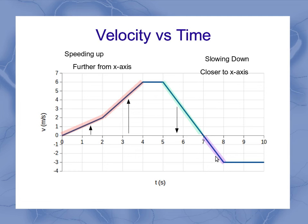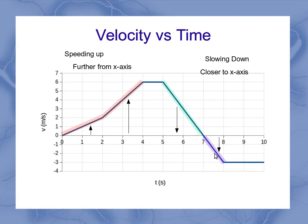So what about this chunk down here? It's below the x-axis, but if you notice, I'm moving further and further away from the x-axis as I'm going. I'm moving backwards, but I'm also speeding up as I'm moving backwards. I started not moving, and then I started backing up faster and faster. So you have to be careful when you think about acceleration versus speeding up and slowing down — they're not necessarily the same. This entire segment is a negative acceleration, but in this case I'm slowing down up here, and down here I'm speeding up.